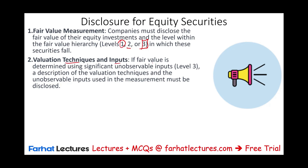For valuation techniques and inputs: if fair value is determined using significant unobservable inputs — which is Level 3 — we need a description of the valuation technique and the unobservable inputs used. What did you use? Did you use cash flow? How did you come up with that cash flow? Which interest rate did you use? How long is the period? How did you arrive at that interest rate? Did you use third-party information? You need to disclose all of this.